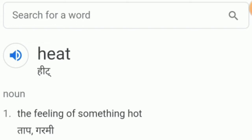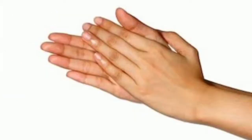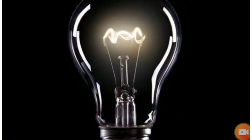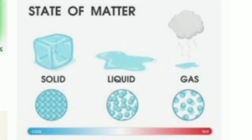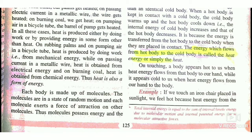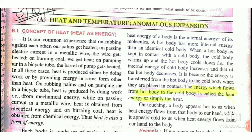Heat basically means the feeling of something hot. In daily life there are many examples, like rubbing our hands produces heat, or the burning of a bulb. As you would have read in your previous classes, substance is made up of molecules, and those molecules are in a state of random motion — whether it is a solid, liquid, or gas. The molecules are always in motion and they exert a force of attraction on each other, so they possess energy.